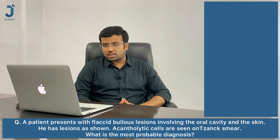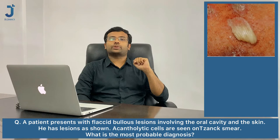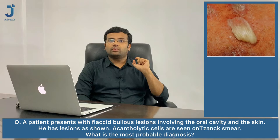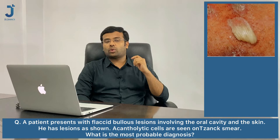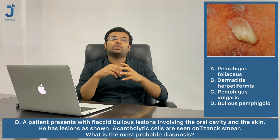The first question: a patient presents with flaccid bullous lesions involving the oral cavity and the skin. Acantholytic cells are seen on Tzanck smear. What is the most probable diagnosis? The options are pemphigus foliaceus, dermatitis herpetiformis, pemphigus vulgaris, and bullous pemphigoid.